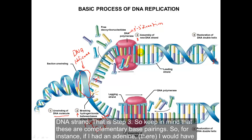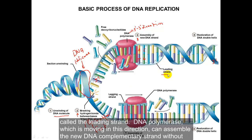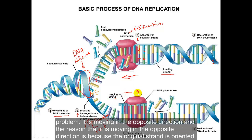These are complementary base pairings — if there is an adenine, there will be a thymine; if there is a cytosine, there will be a guanine. On the top strand, called the leading strand, DNA polymerase moves in one direction and can assemble the new complementary strand without interruption, adding new nucleotides until it reaches the end. However, on the bottom strand — called the lagging strand — there is a problem: it is moving in the opposite direction, because the original strand runs opposite to the top strand.